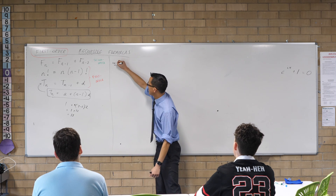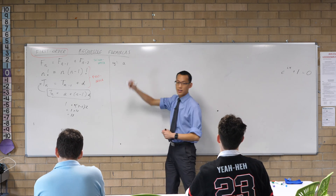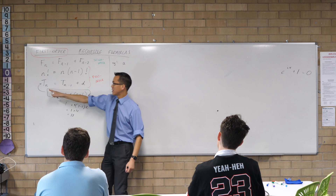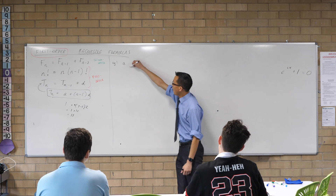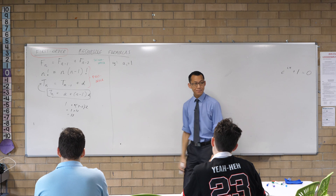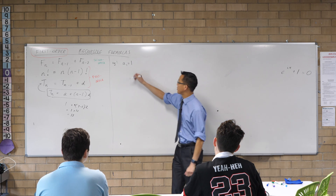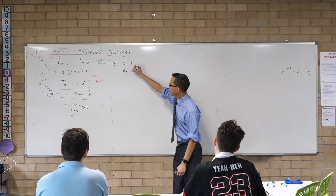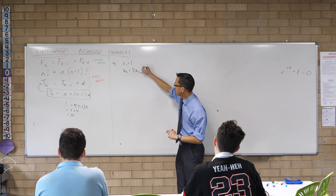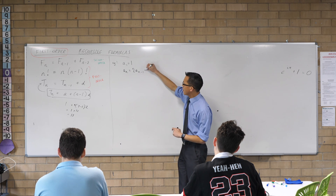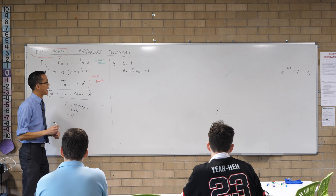So here's example one. Let's suppose there's some sequence of numbers a1, a2, a3 — so this is going to be a_n. We'll start off with 1, and then to get to the next term in the sequence, each term is going to be equal to double the previous term and then add 1.